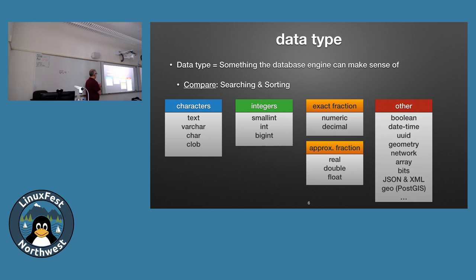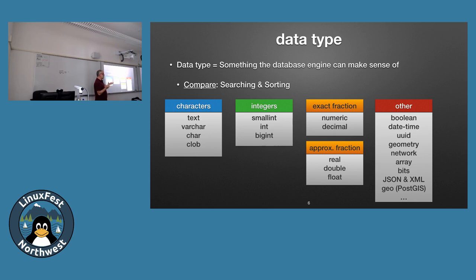Next, let's talk about data types. A data type is a chunk of data that the database understands. The difference between text and numbers is you don't multiply, divide, or subtract text, but you do with numbers. When the database understands a data type, it can do things like total up numbers to give you a grand total across many rows.